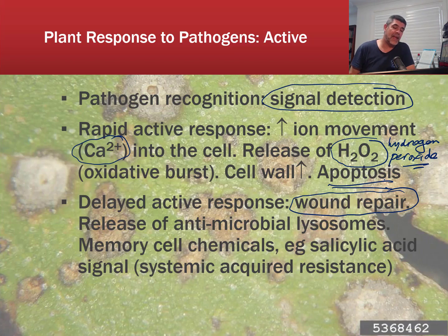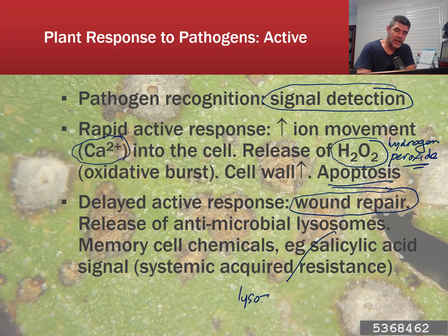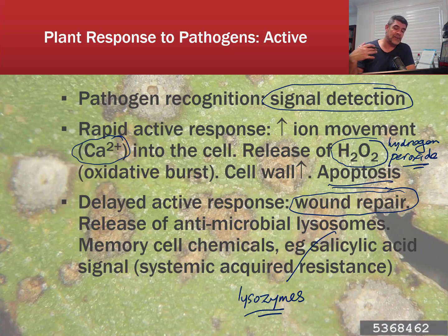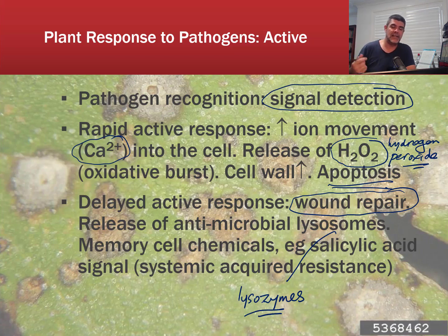Plants can also release antimicrobial enzymes from lysosomes — these are the basic waste-cleaning structures within cells. There can also be memory cell chemicals; salicylic acid, for example, can be released. This is a form of acquired resistance, and again, in humans we're going to talk about innate immunity — what we're born with — and acquired immunity: what happens over the course of our lives as we are exposed to various things.